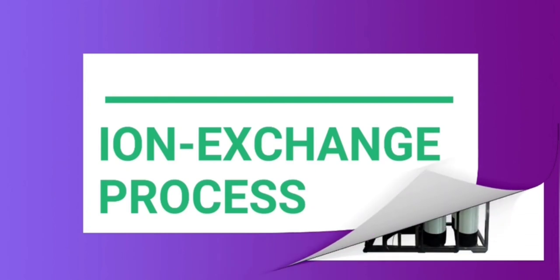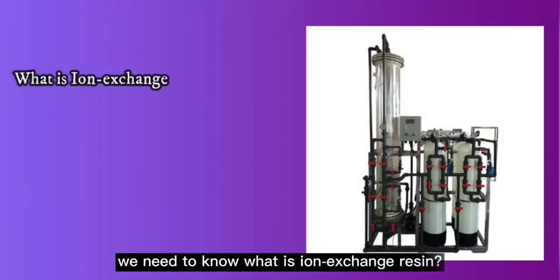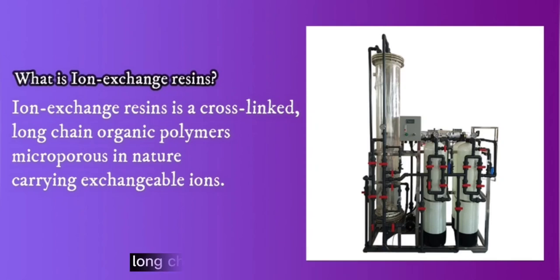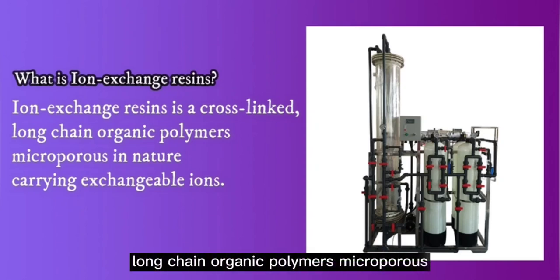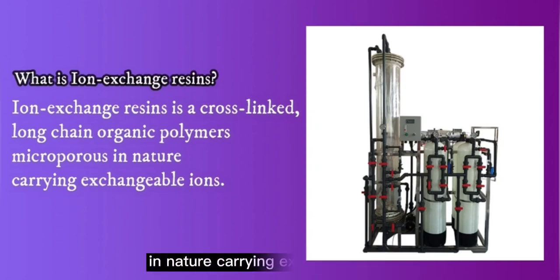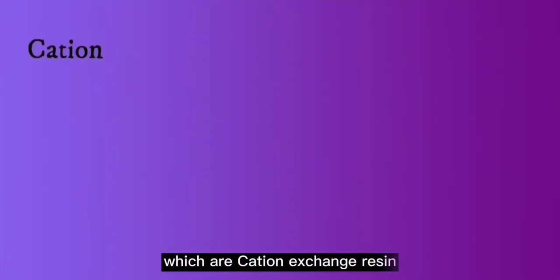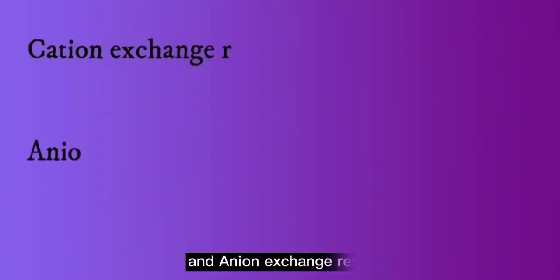Before going any further, we need to know what ion exchange resins are. Ion exchange resins are cross-linked long-chain organic polymers, microporous in nature, carrying exchangeable ions. There are two types of ion exchange resins: cation exchange resin and anion exchange resin.